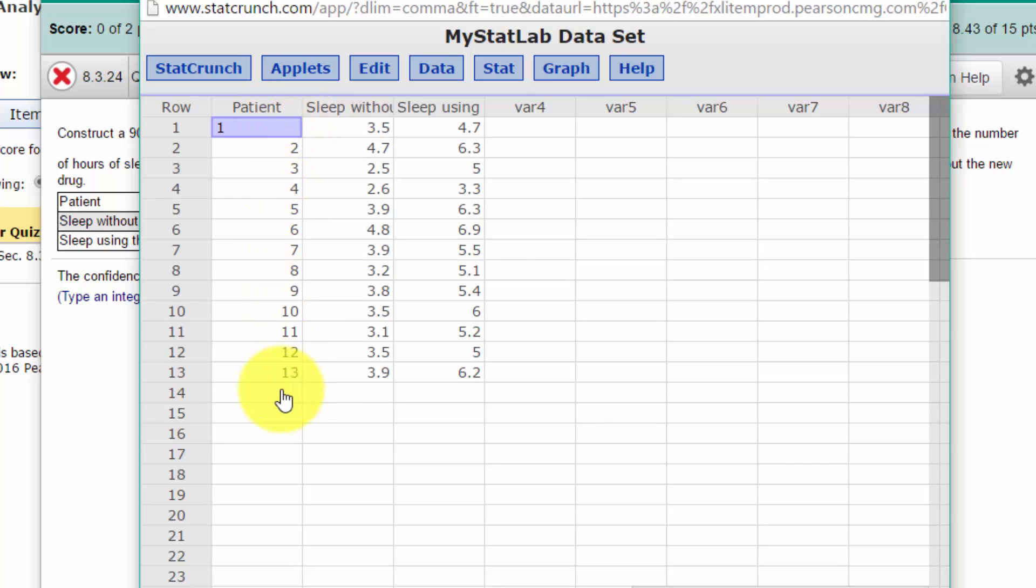We've got three columns. The first lists our patients, and we've got a column that shows the sleep without using that aid and then sleep using the aid. That should tell you because you've got one patient and you've got two measurements, this is a paired samples test and we're going to give a confidence interval for this paired sample.